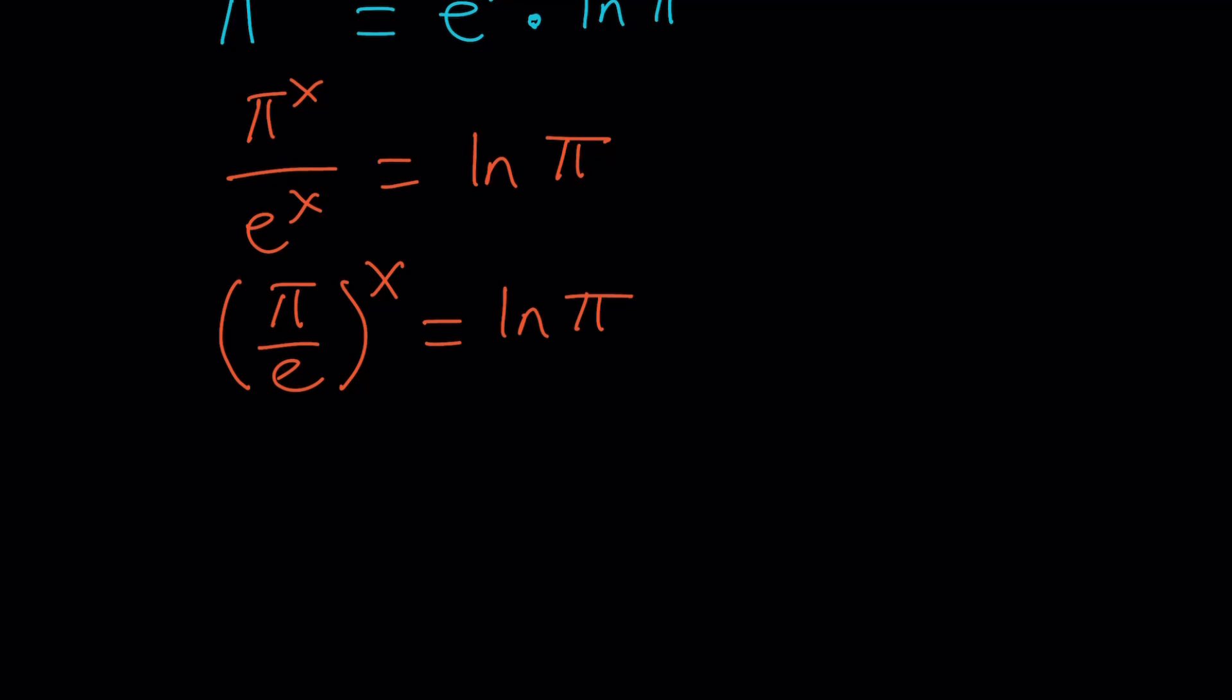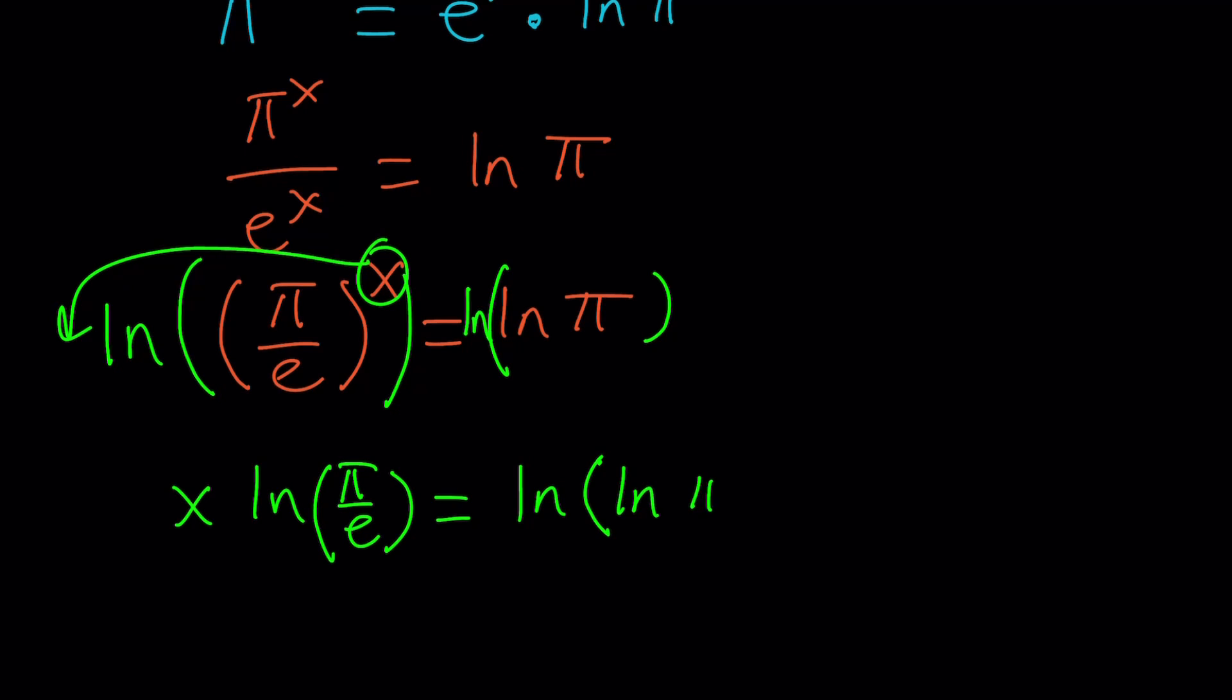At this point, you may just log both sides or ln both sides. That's going to come down to the same thing. Let's ln this one, and let's ln this one. That's going to give us, of course, this x is going to move. We're going to get x ln pi over e. Let's put that in parentheses.